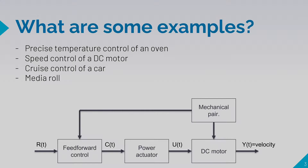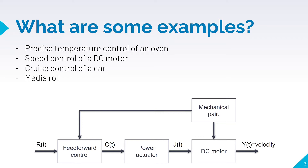What are some examples of feed-forward control? We have precise temperature control of an oven. The power is reduced when the ambient temperature, which is our disturbance, increases. This control responds to room temperature disturbances before the oven temperature changes. We also have speed control of a DC motor. This works when the current consumed is measured and the motor voltage is increased when the current increases to compensate for the loss of speed.